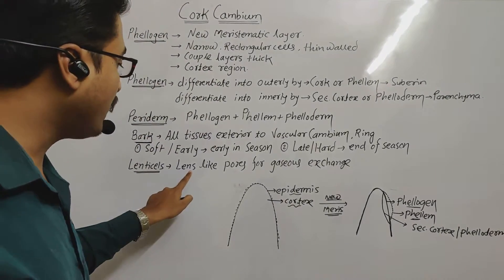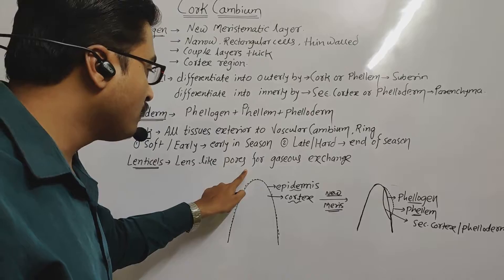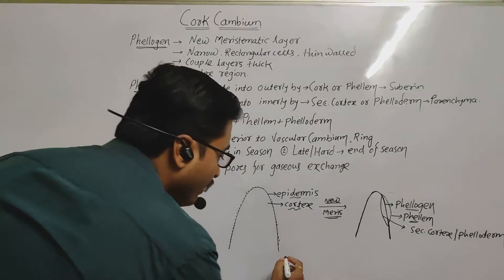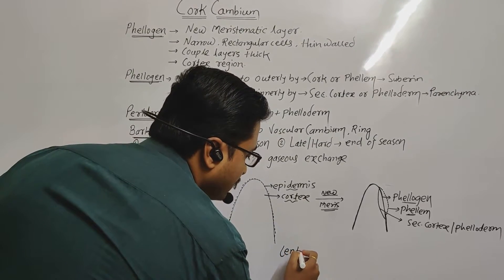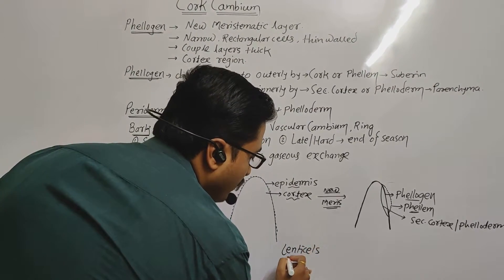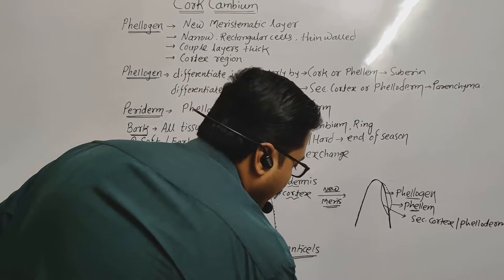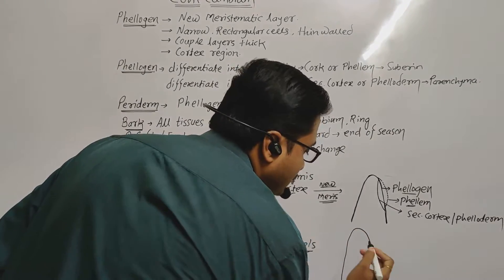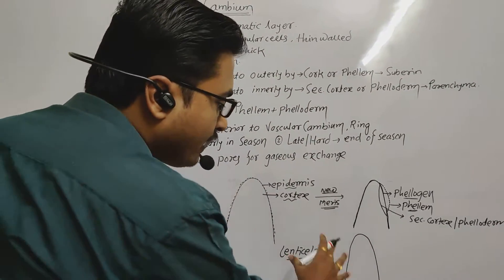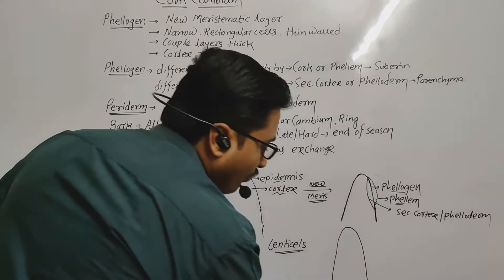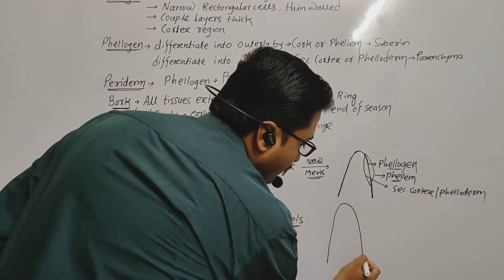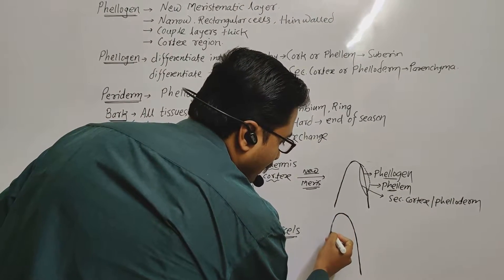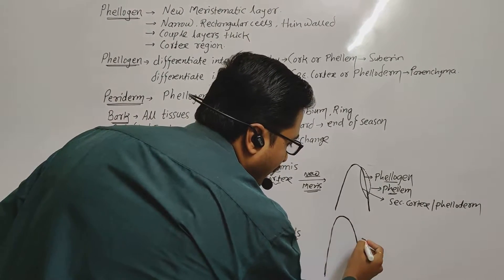Lenticles are lens-like pores used for the purpose of gaseous exchange. In the plant stem, there is a layer called phelogen, which is the new meristematic tissue.